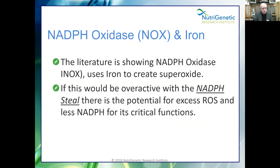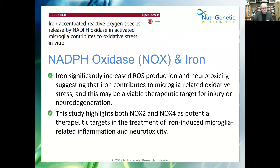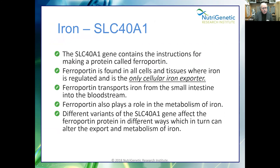A study on iron and reactive oxygen species shows that iron accentuates ROS released by NADPH oxidase in activated microglia, contributing to oxidative stress. Iron significantly increased ROS production and neurotoxicity, suggesting iron contributes to oxidative stress and may be a valuable therapeutic target for injury or neurodegeneration, with NOX2 and NOX4 as potential targets.